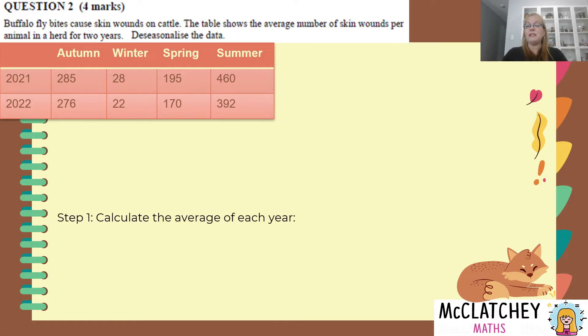So firstly we want to calculate the average for each year. So here's the year 2021, here's the year 2022. Remember with averages, you need to add them all up and divide by how many there are and there are four seasons in the year. So we're going to take those first four numbers, divide by four, we get 242. Then we're going to do the same thing for 2022, add those four numbers up, divide by four and we get 215.